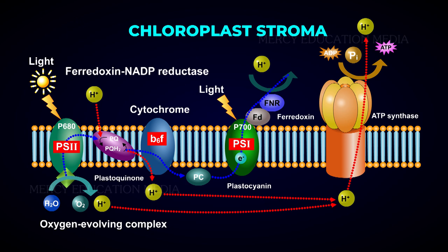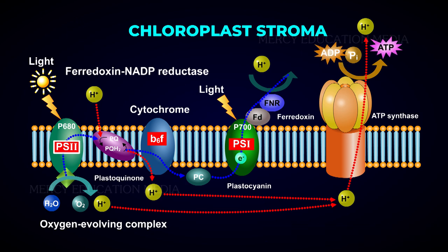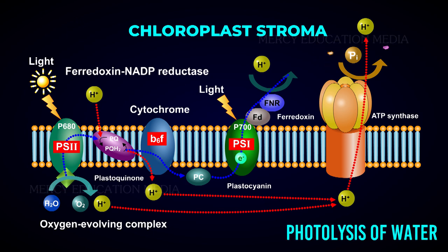The electrons released from PS2 phosphorylate ADP to ATP. This process of ATP formation from ADP in the presence of light in the chloroplast is called photophosphorylation. Now, PS2 is in an oxidized state. It creates a potential to split water molecules into protons, electrons, and oxygen. This light-dependent splitting of water molecules is called photolysis of water.